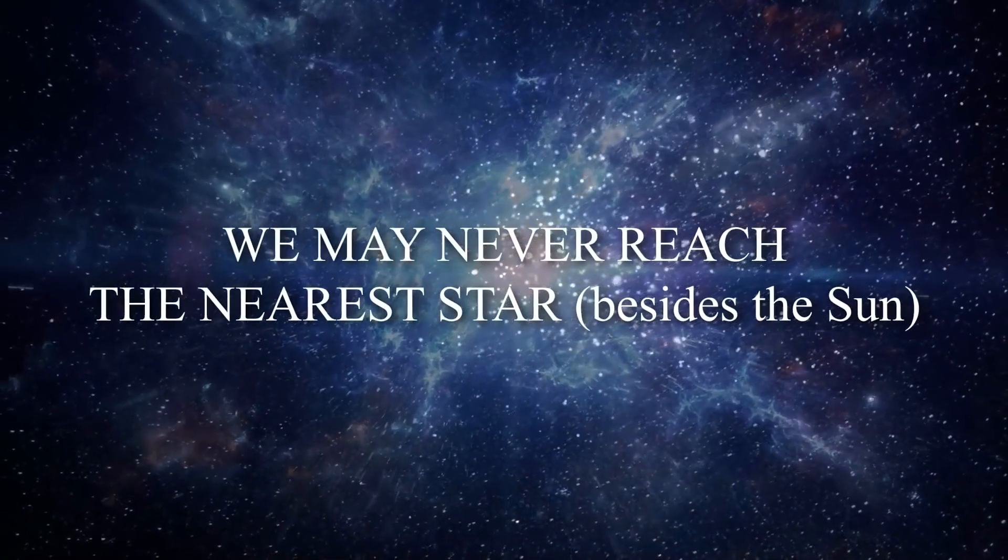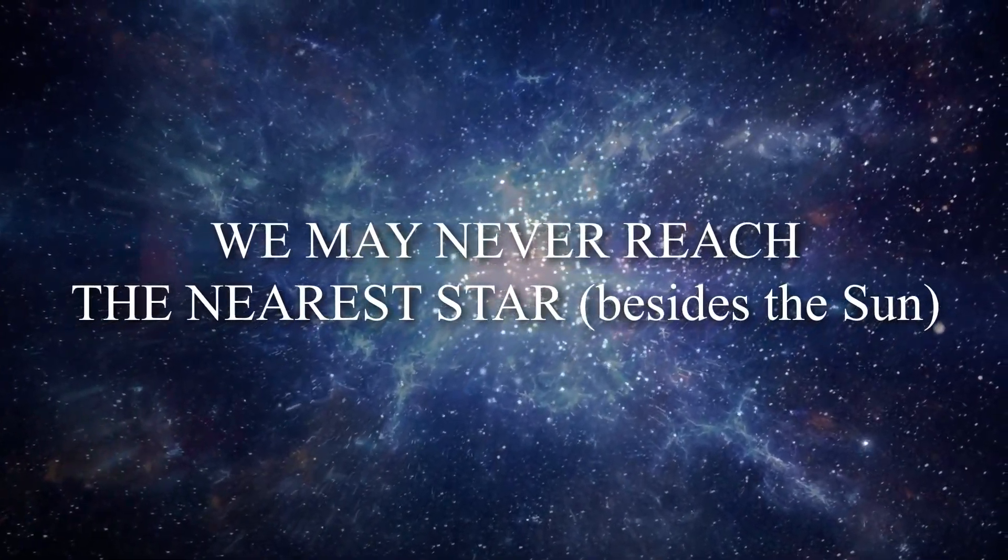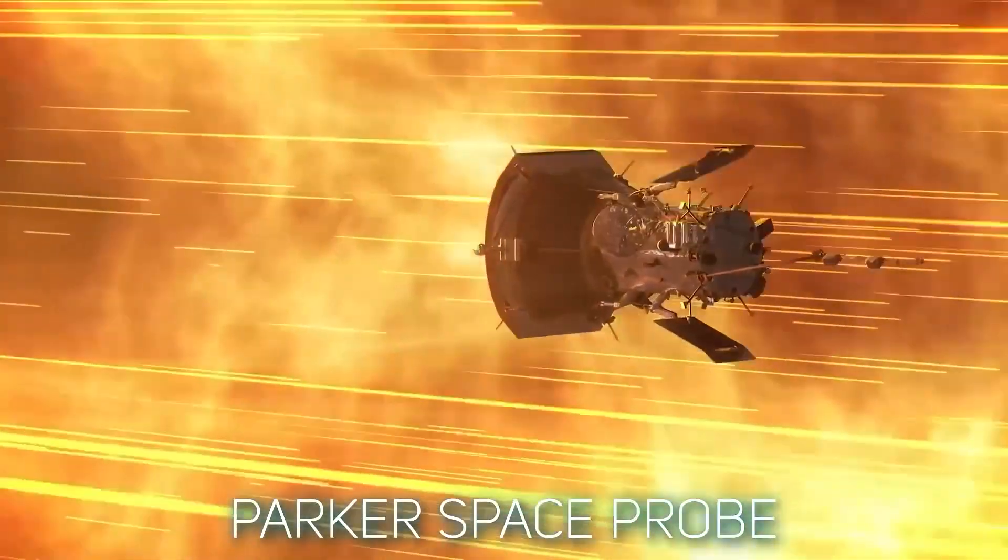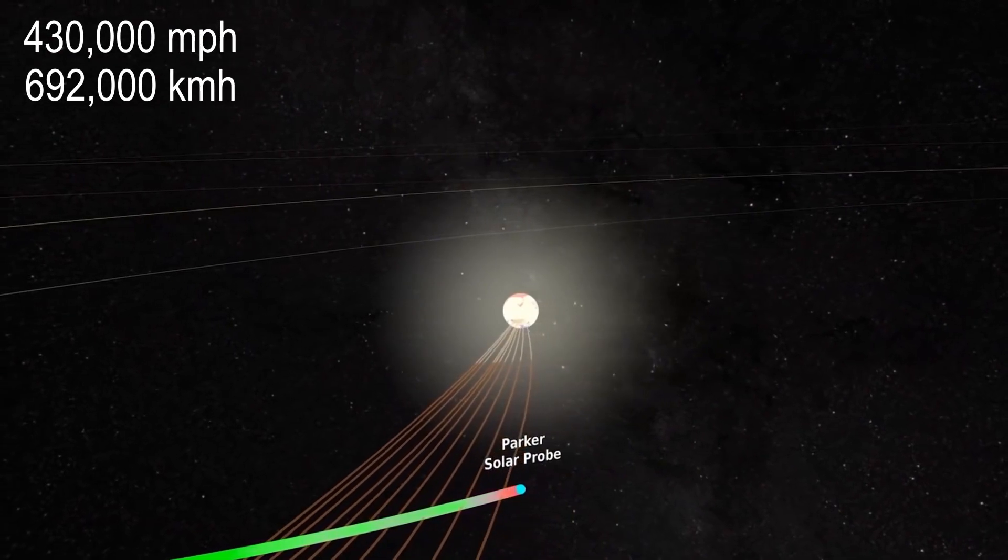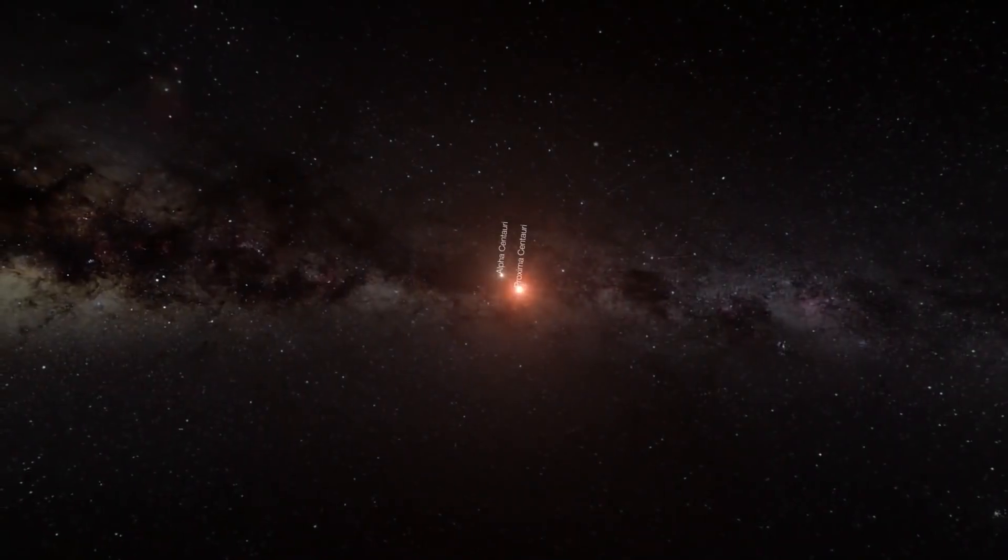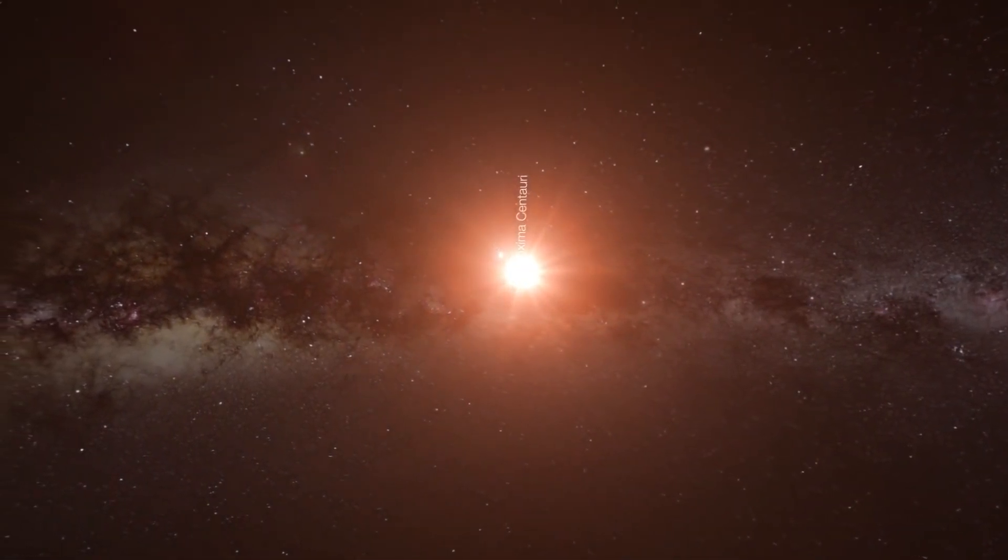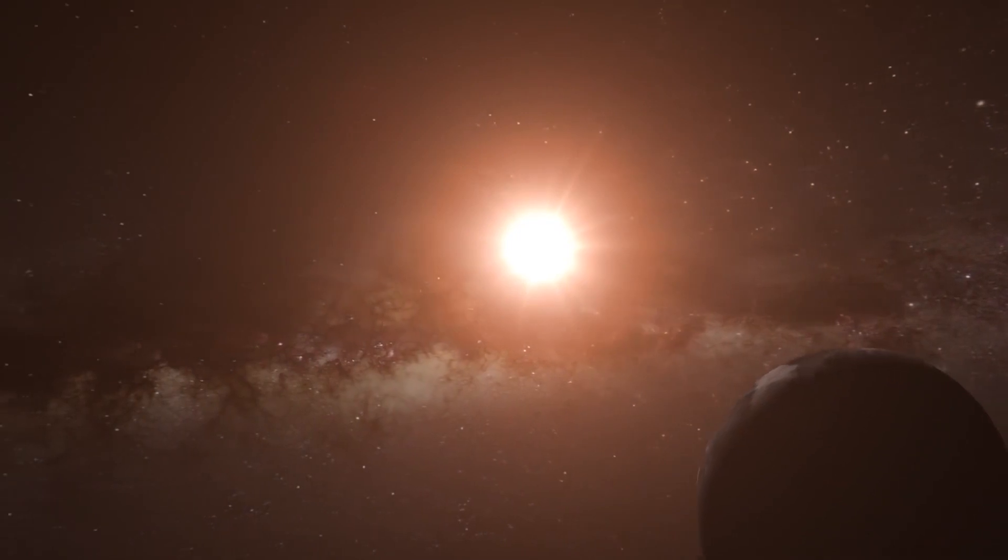And number ten: We may never reach the nearest star besides the Sun. Okay, so not exactly a fact, or even a popular opinion, but consider this. The Parker Space Probe, the fastest object built by humans, hit 430,000 miles per hour, or a whopping 0.06% of the speed of light. At this speed, we'd reach Proxima Centauri, the nearest star in a mere 6,300 years. That's over 250 generations.